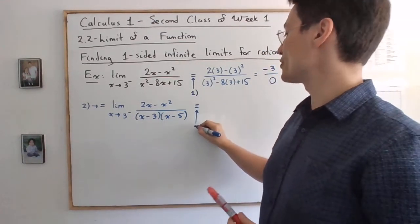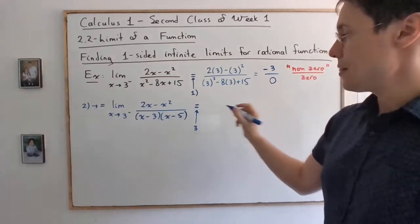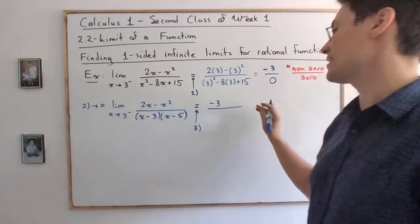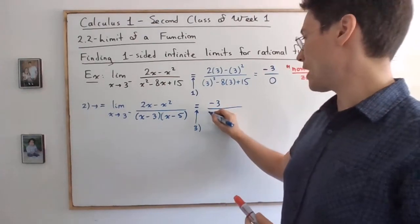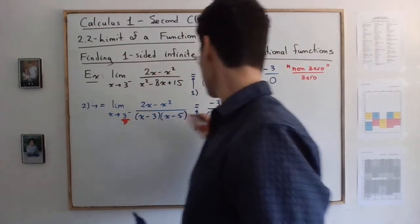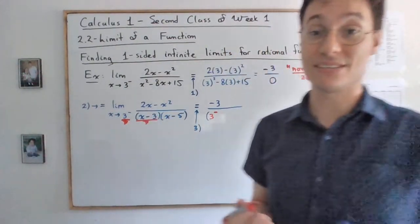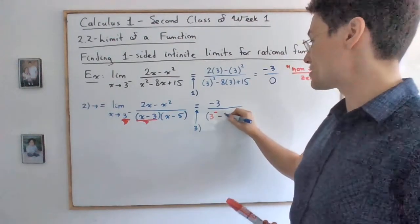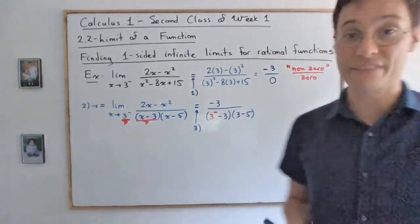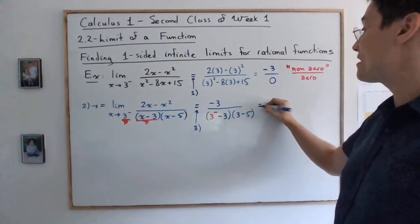Now we're going to use step number three. So in step number three, what we're doing is we're replacing three everywhere. Now the top, we already know that the result is going to give us negative three. So there's no point recalculating it. So here, and now I'll go rather slowly just to make sure that you get it. What I replace here is not three, but three minus. Only in that factor over here, the factor that's giving us the zero.